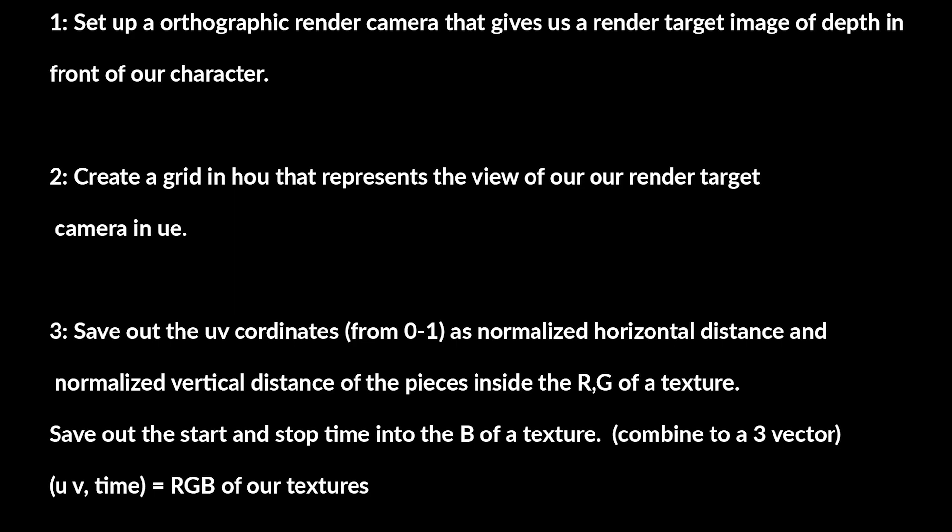The steps we need to take: we need to set up an orthographic render camera that gives us a render target image of depth in front of our character, which would be our knight. Then we need to create a grid in Houdini that represents the view of our render target camera. Then we need to save out the UV coordinates from zero to one as normalized horizontal distance and normalized vertical distance of the pieces inside the RG of a texture.